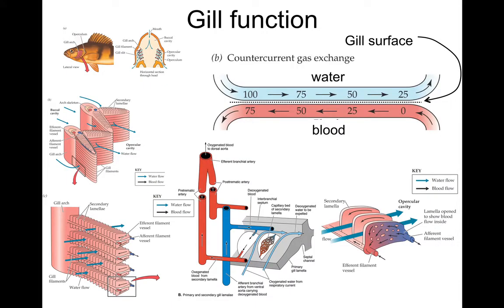In counter current gas exchange across the gills, there is a constant gradient of oxygen maintained between the water and blood at every point. Even though oxygen decreases in the water as it travels across the gill, the blood it encounters is progressively more depleted because blood circulates in the opposite direction to the water. The gradient is constant all the way across the gill — that's the hallmark of counter current gas exchange.